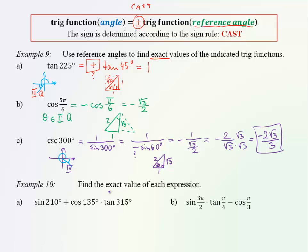The next question asks us to find the exact value of each expression. Each of these questions really contains three of the previous type, so we need to be fluent in connecting trig values with angles and special triangles. Sine of 210 — 210 is more than 180, so it's in the third quadrant. Sine in the third quadrant is negative. The reference angle is 30. So we have negative sine of 30.